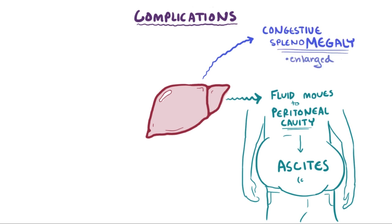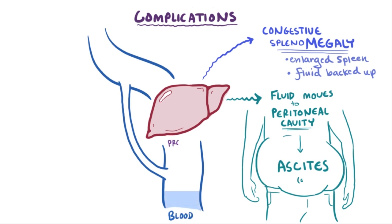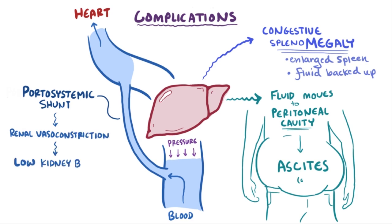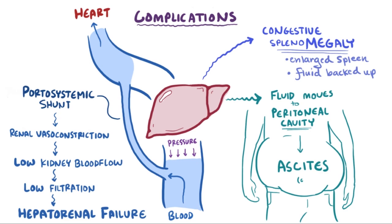Higher portal vein pressure means fluid in blood vessels is more likely to get pushed into tissues and across into large open spaces like the peritoneal cavity. That's why cirrhosis leads to excess peritoneal fluid, a condition called ascites, and can result in complications like congestive splenomegaly and hypersplenism, where the spleen becomes enlarged because fluid and blood can't get into the liver and backs up into the spleen. The circulatory system also starts diverting blood away from the liver — known as a portosystemic shunt — following the path of least resistance. These changes in portal flow ultimately trigger renal vasoconstriction, decreasing blood flow through the kidneys, leading to decreased filtration and hepatorenal failure, where kidney failure follows liver failure.